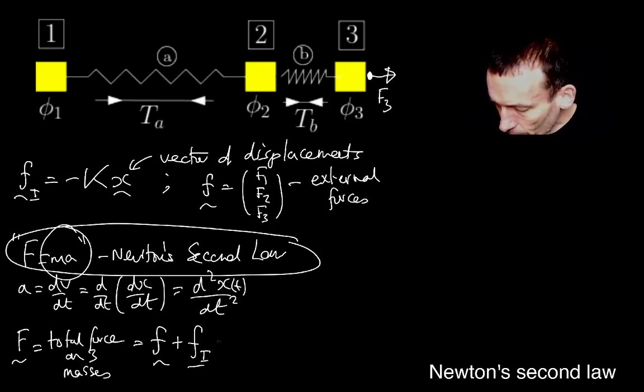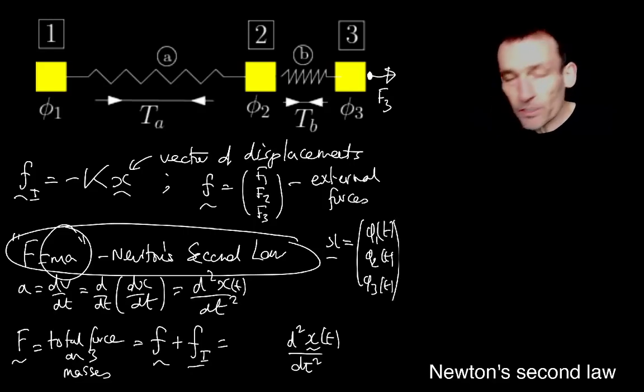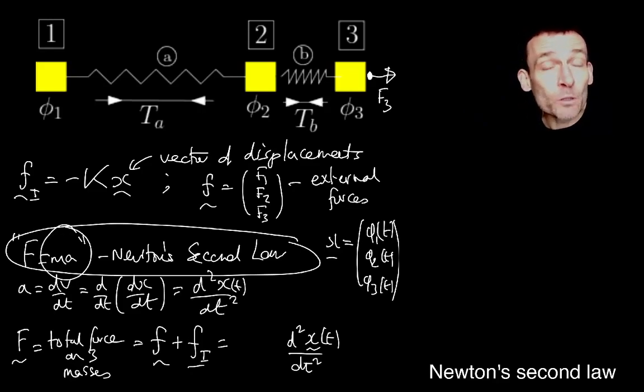So somehow it's going to be related to the second derivatives in time of this displacement vector. If we call these phi 1 of t, phi 2 of t, phi 3 of t, these are displacements of masses 1, 2, 3 in this case. And we're now assuming that those displacements can evolve in time. So the masses can move around, perhaps oscillate. We'll see some oscillations of these masses in forthcoming examples.